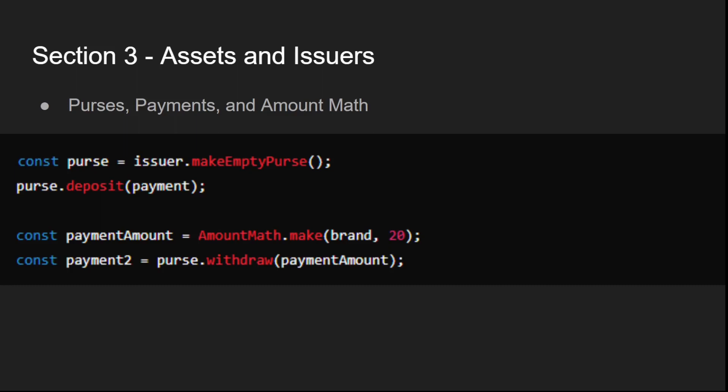Understanding and utilizing these concepts is essential for managing digital assets effectively within your smart contracts. By leveraging brands, issuers, mints, purses, payments, and amount math, you can create secure and efficient mechanisms for handling value transfers in the Agoric ecosystem.